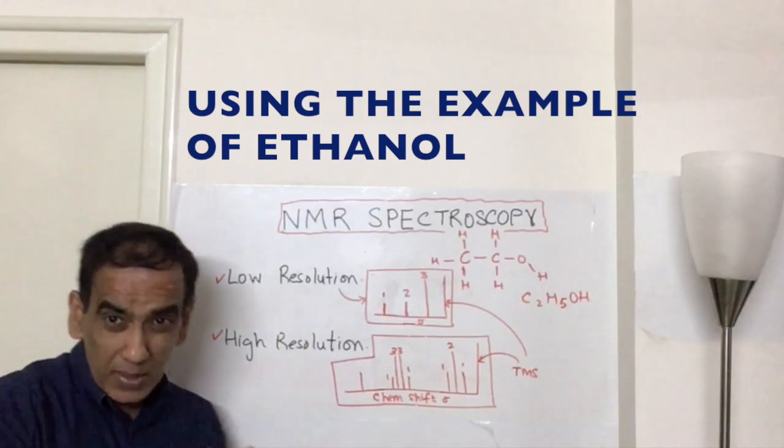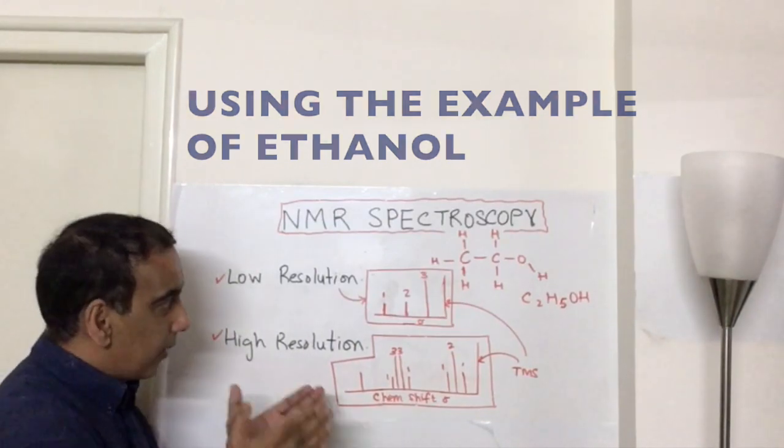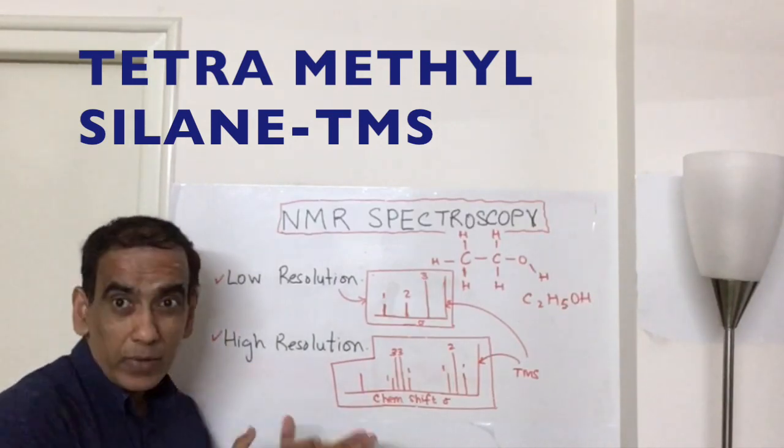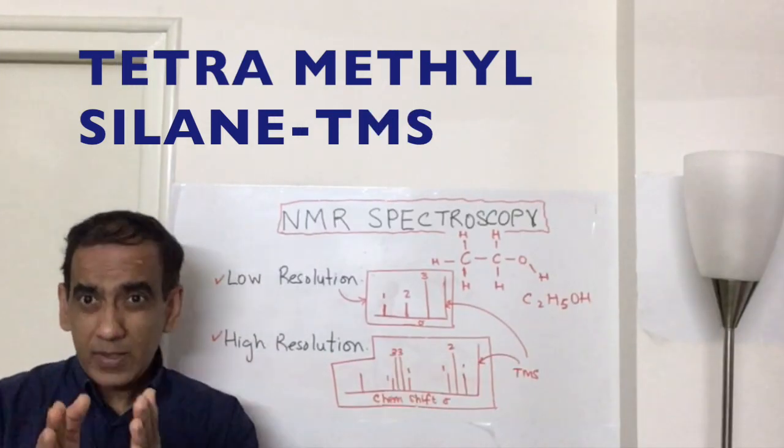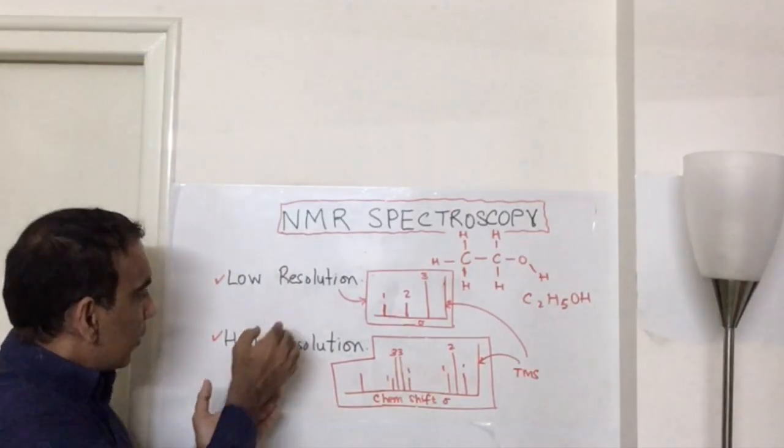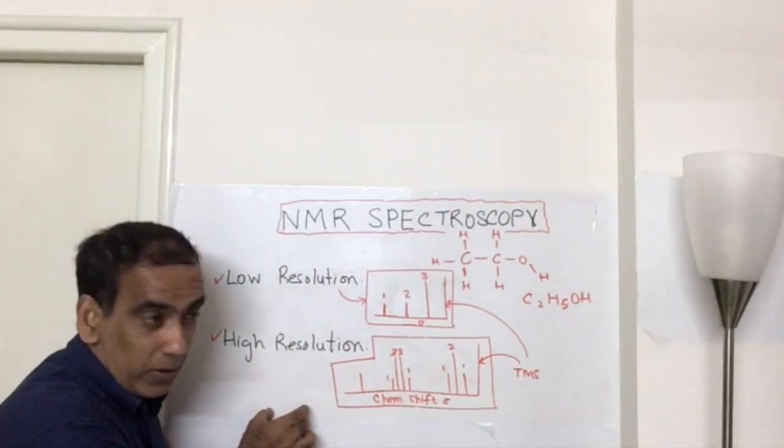All of these peaks in NMR spectroscopy are relative to tetramethylsilane as a molecule against which all other readings are standardized. But students of higher-level IB chemistry are also required to look at the high-resolution NMR spectrum.